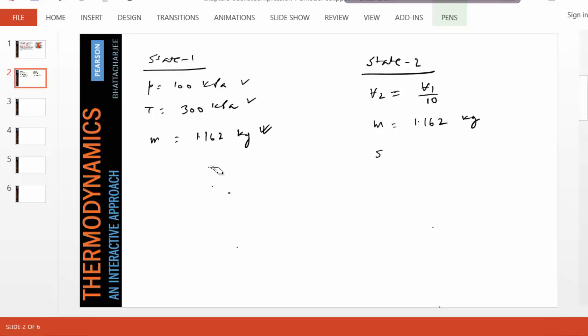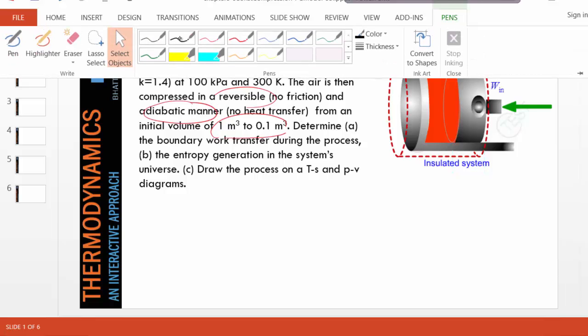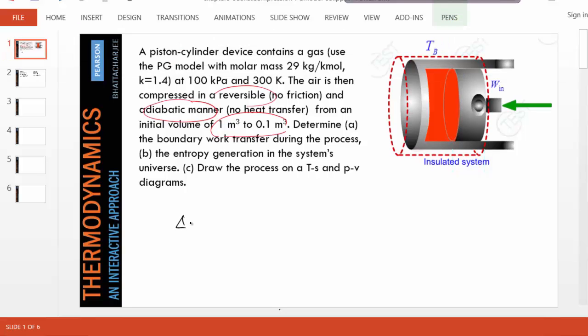And in the other problem, entropy was given to be a constant. But in this particular problem, we can prove that entropy remains constant. Notice, what is given to us is that no friction and no heat transfer. So therefore, if we use the entropy equation for the closed process, notice it's a closed process problem.